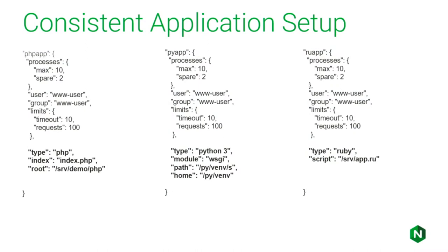This is really great progress. The picture here shows how completely different application languages and platforms can be consistently configured using the same approach and the same API. Obviously, some application parameters will be different, but the way you access them — you no longer need to edit a number of different configuration file parameters. You just have one same kind of API call.